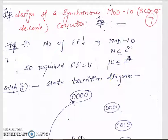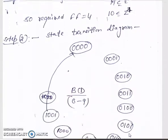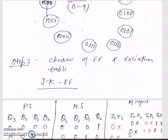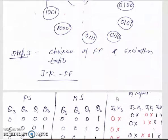The state transition diagram counts 0, 1, 2, 3, 4, 5 and so on up to 9, then repeats — that is the BCD sequence 0 to 9. We choose the JK flip-flop, write the excitation table for the JK flip-flop, and using it we write the excitation table of the counter with present state, next state, and required inputs.